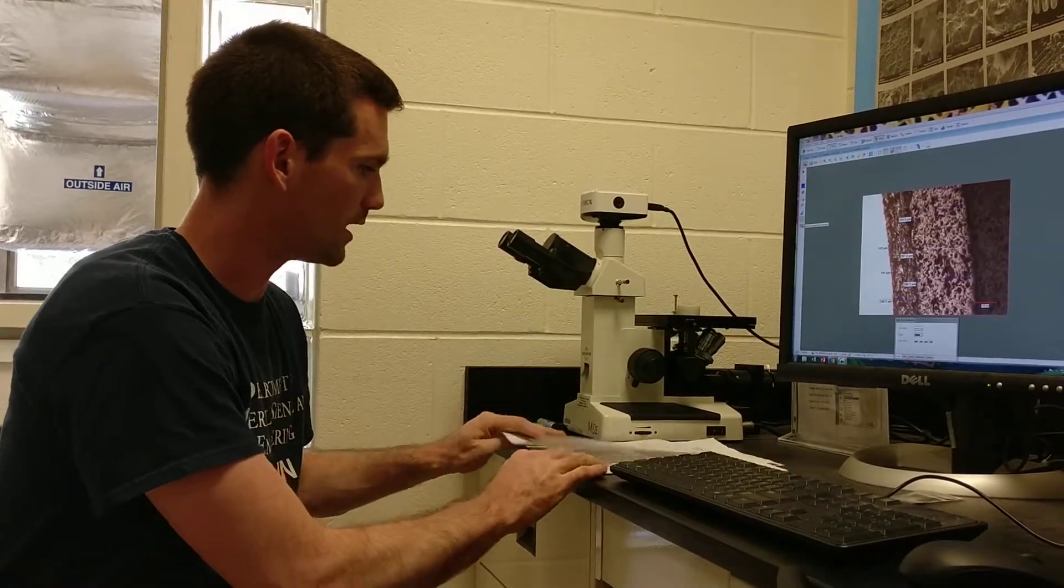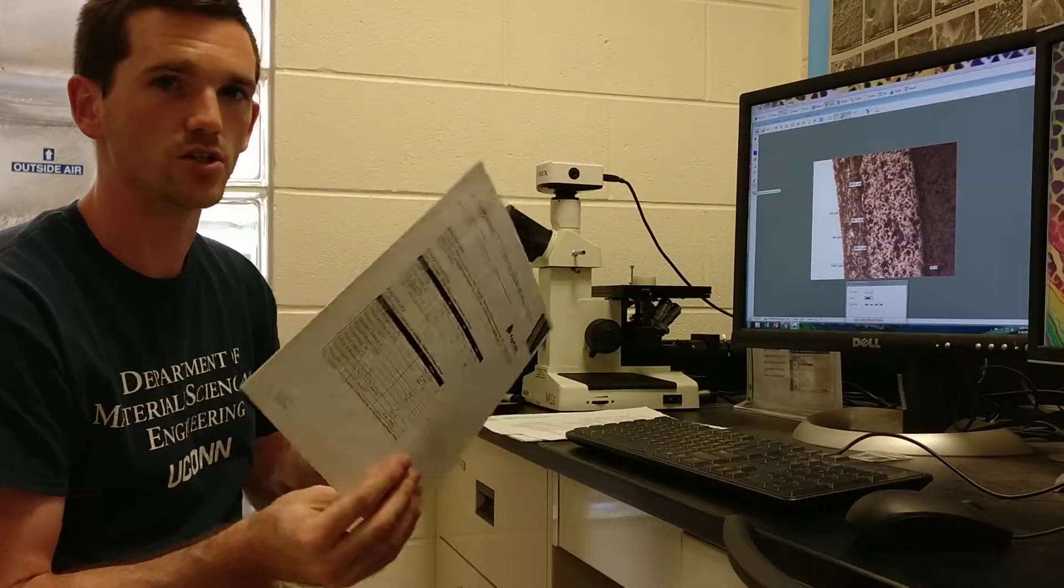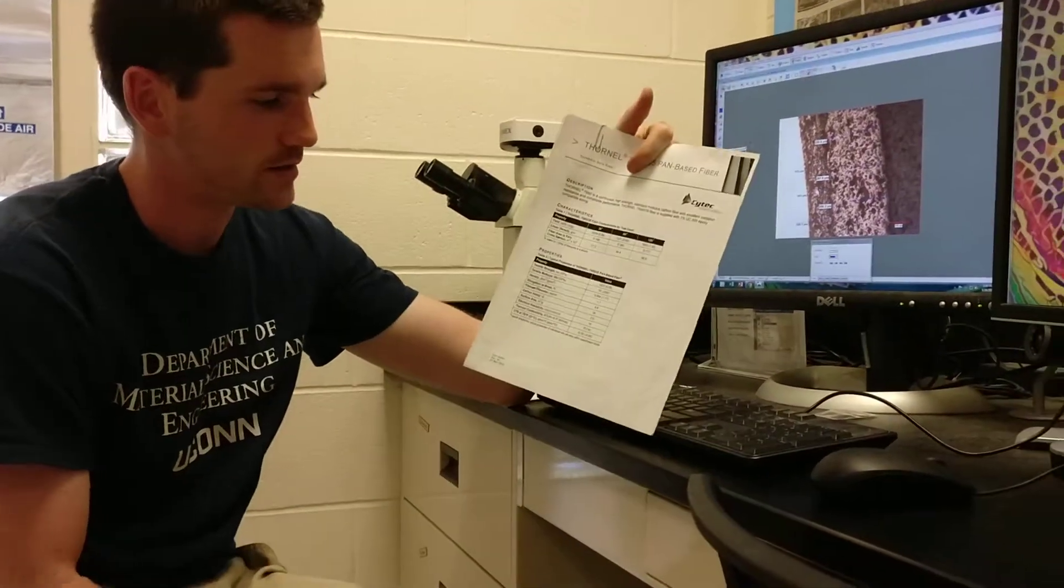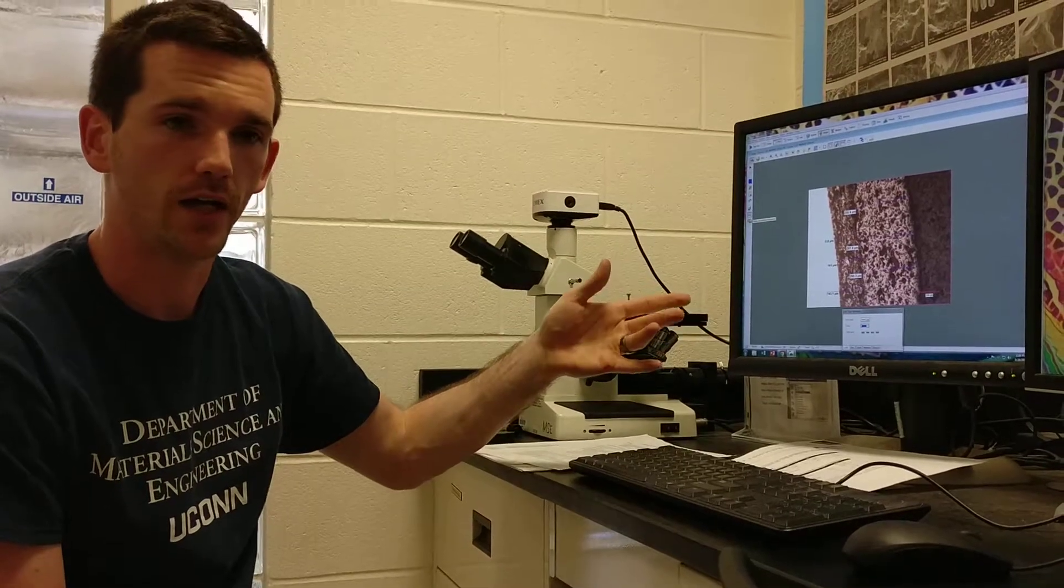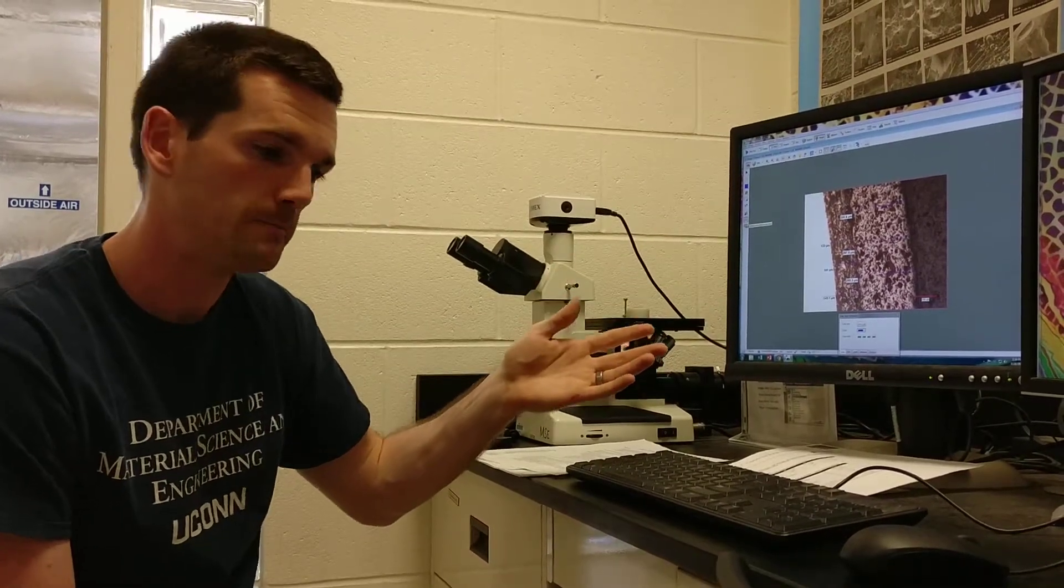Try to get a good section of the carbon fiber to image. We've also got a specification sheet here that lists the diameter of the carbon fiber as 6.8 microns across, so you can double check to see if your measurements are correct. If not, then there's a potential where the microscope should be calibrated to make sure that the line you're drawing is actually the distance it says it is.